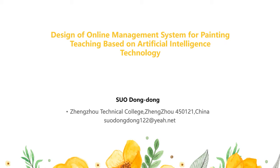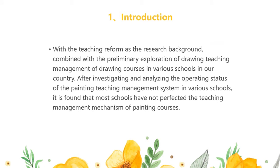With the teaching reform as the research background, combined with the preliminary exploration of drawing teaching management of courses in various schools in our country, after investigating and analyzing the operation status of painting teaching management systems in various schools, it is found that most schools have not perfected the teaching management mechanism of painting courses. The traditional painting teaching online management system based on web technology is used for repeating course teaching.